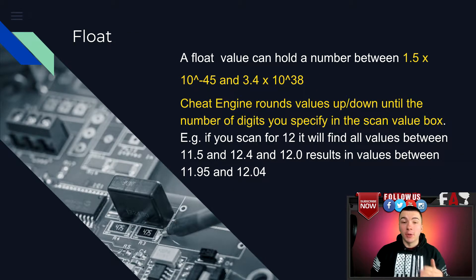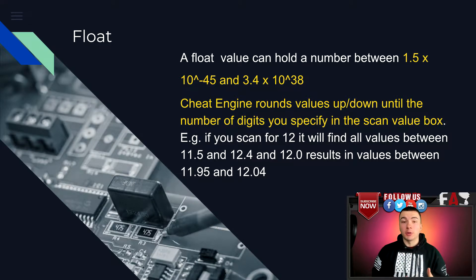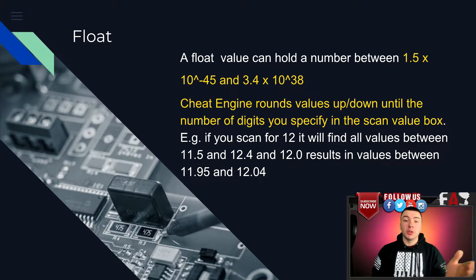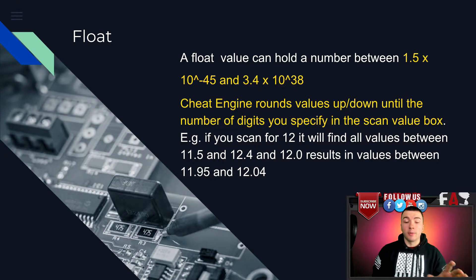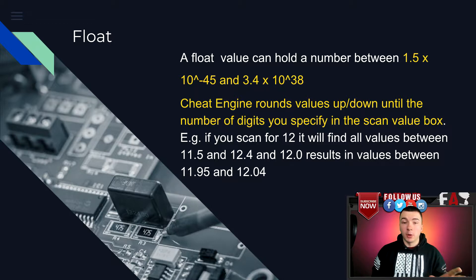Next up we have the float. Like the 4-byte value, the float is the other most important scan type you can do if you're searching for a decimal value. You can change the precision of your search by adding a decimal point to the value that you want to scan for. For example, Cheat Engine's help website says if you scan for 12, it will find all values between 11.5 and 12.4. So if you scan for 12.0, it results in values between 11.95 and 12.04.